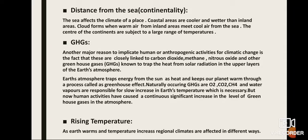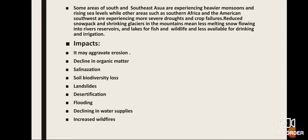Rising temperature: as the earth warms and temperature increases, regional climates are affected in different ways. Some areas of South and Southeast Asia are experiencing heavier monsoons and rising sea levels, while other areas such as Southern Africa and the American Southwest are experiencing more severe droughts and crop failure. Reduced snowpack and shrinking glaciers mean less melting snow flowing into rivers, reservoirs, and lakes for fish and wildlife, and less water available for drinking and irrigation.